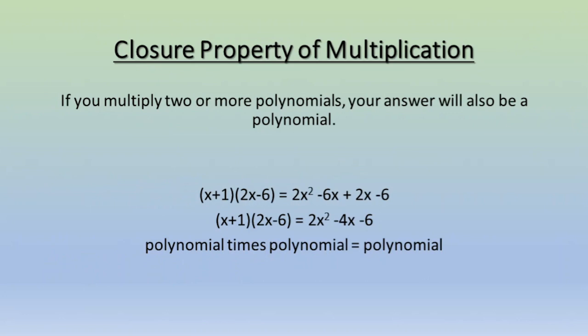Another property that comes up in this section is the closure property of multiplication. You've probably seen the closure property of addition in earlier lessons. With the closure property of multiplication, what it states is that if you multiply two or more polynomials, your answer will also be a polynomial. In the past you've seen things like if you take two integers and you multiply them together, that will result in an integer. So if I do something like 2 times 9 equals 18, 2, 9, and 18 would all be examples of integers.